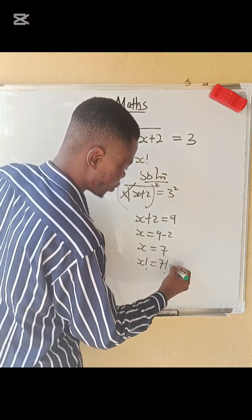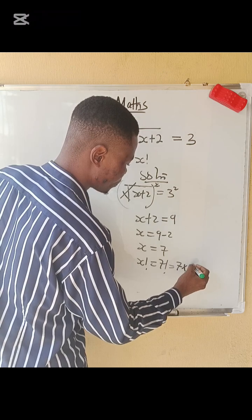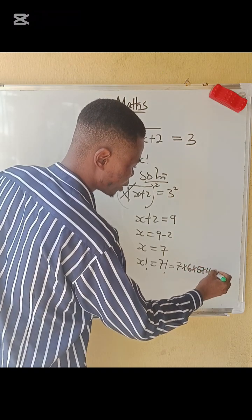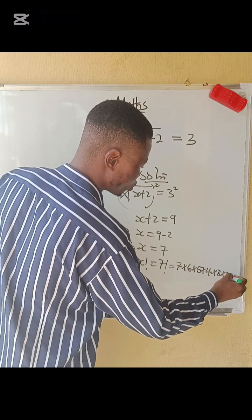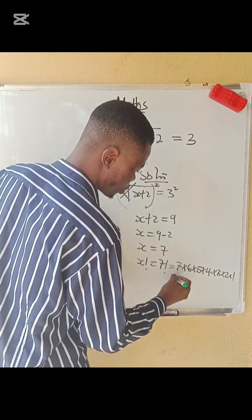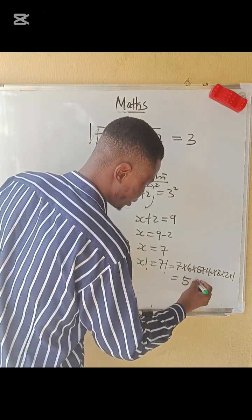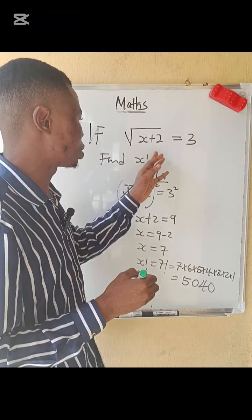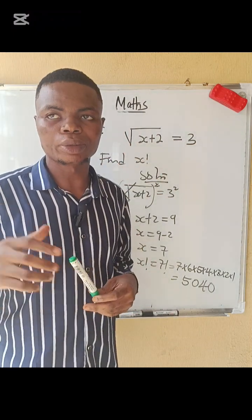So I'm going to have 7 times 6 times 5 times 4 times 3 times 2 times 1. This is going to give us 5040, which is the answer to this question. Very simple. Bye.